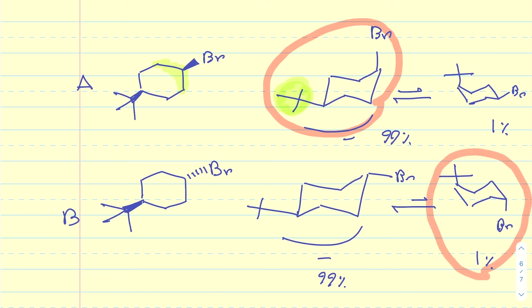In other words, at any given moment, for A, 99% of our molecules are in the reactive conformation. And again, I'm making up these numbers, but it's something close to that. And for B, 1% of our molecules are in the reactive conformation. So effectively, for B, the concentration of the reactive molecules is much lower than A. So A is going to undergo the E2 elimination much faster.